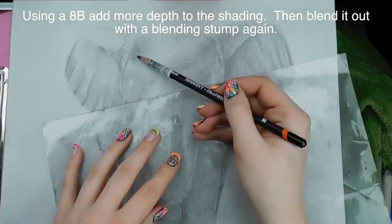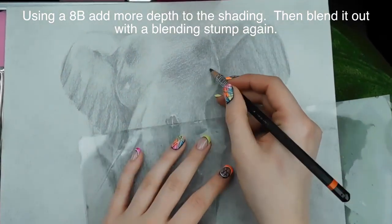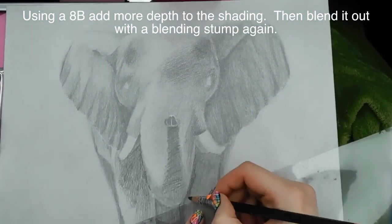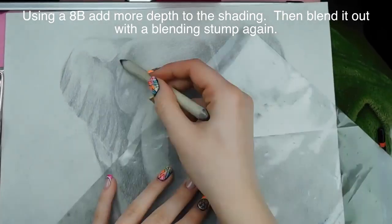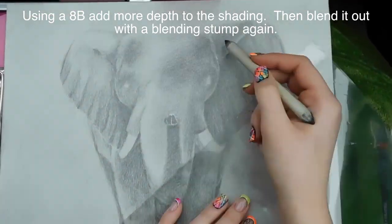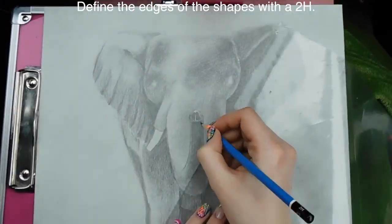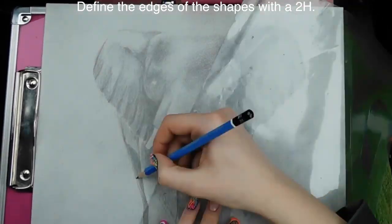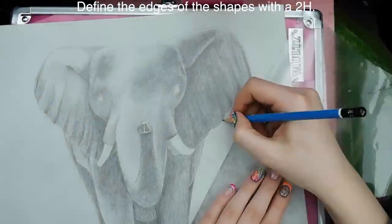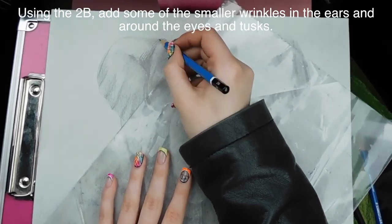Looking back at my reference photo, I'm going to find the areas that need to be darkened more, add some more 8B, and blend them out again. Now I'm going to define all my lines with a 2H, just running over the perimeter of everything and making sure it's nice and sharp.